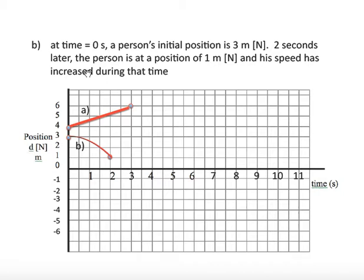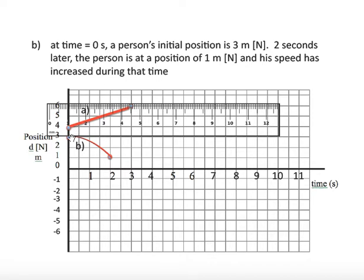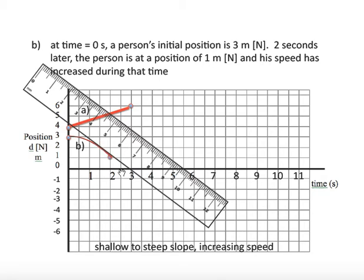Let's look at example B. At time 0 seconds, a person's initial position is 3 meters north. We put a dot there. 2 seconds later, the person is at a position of 1 meter north. 2 seconds later, 1 meter north. And his speed has increased. So, the moment you see that phrase, the speed is changing. In this case, the speed has increased. That means we need a curve. This is the curve we would use. When the speed is increasing, we go from a gentle slope to a steep slope. And that's shown with this ruler. Gentle slope to steep slope. So, you could actually take your ruler and try this out for yourself. Shallow to steep. Shallow to steep. Increasing speed.